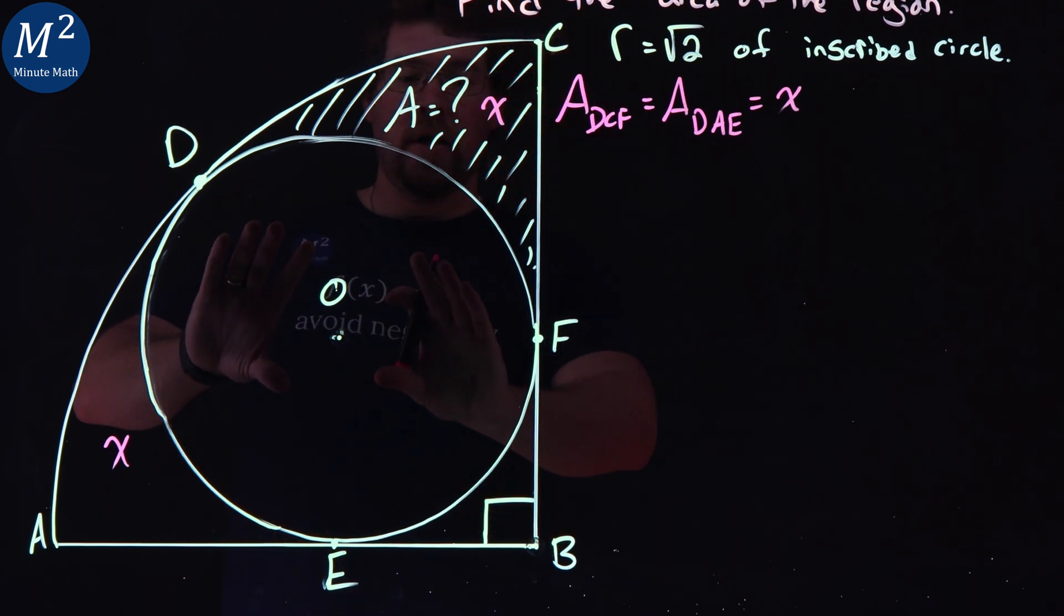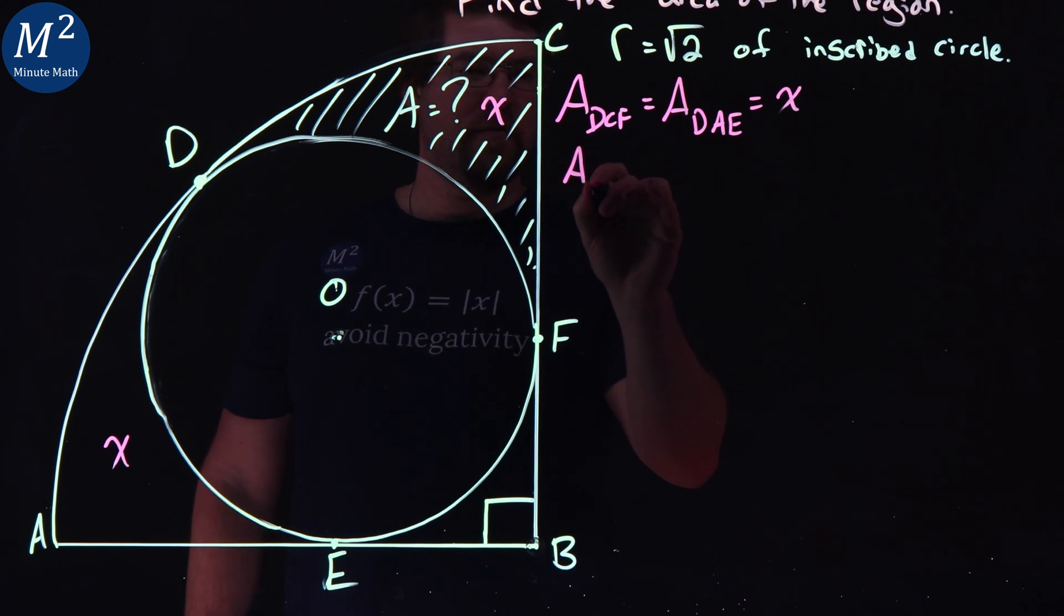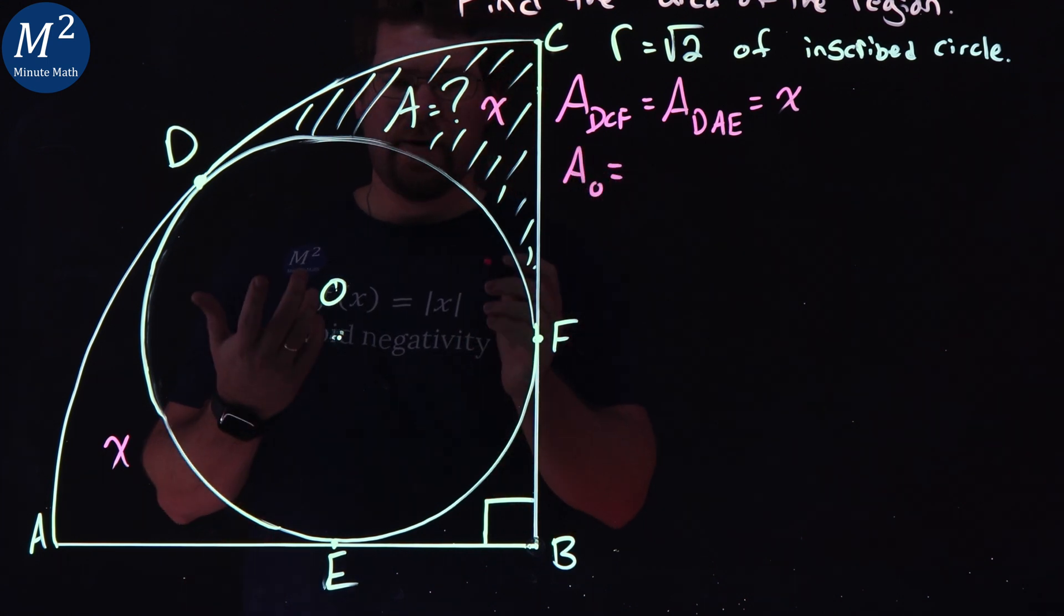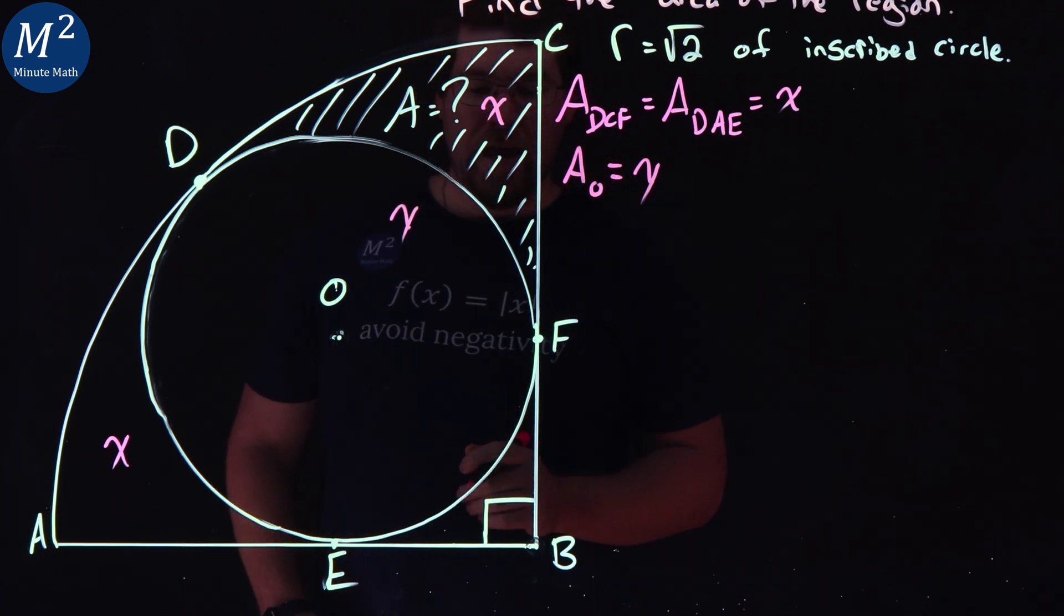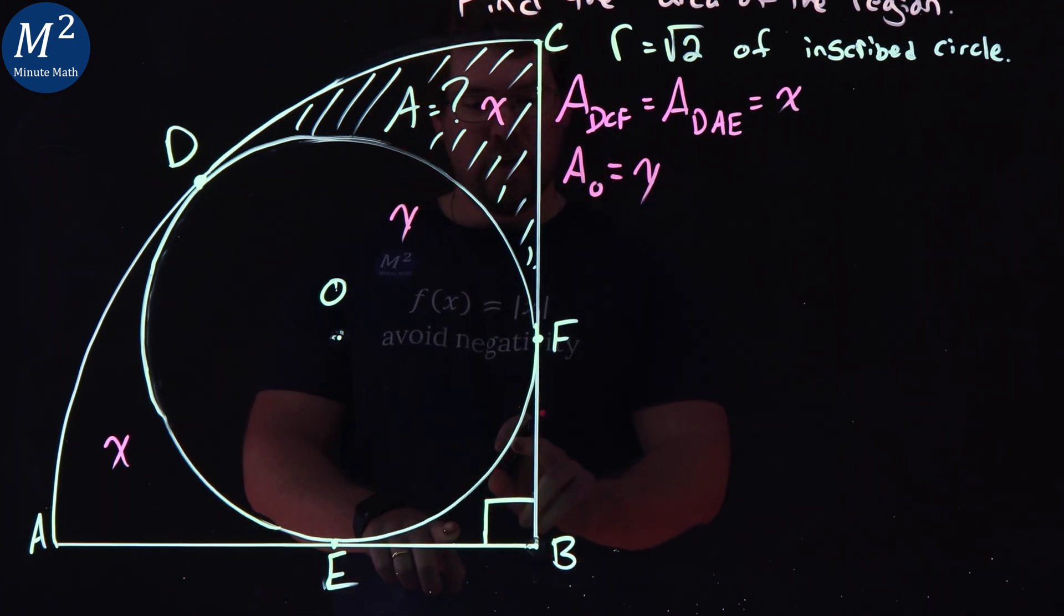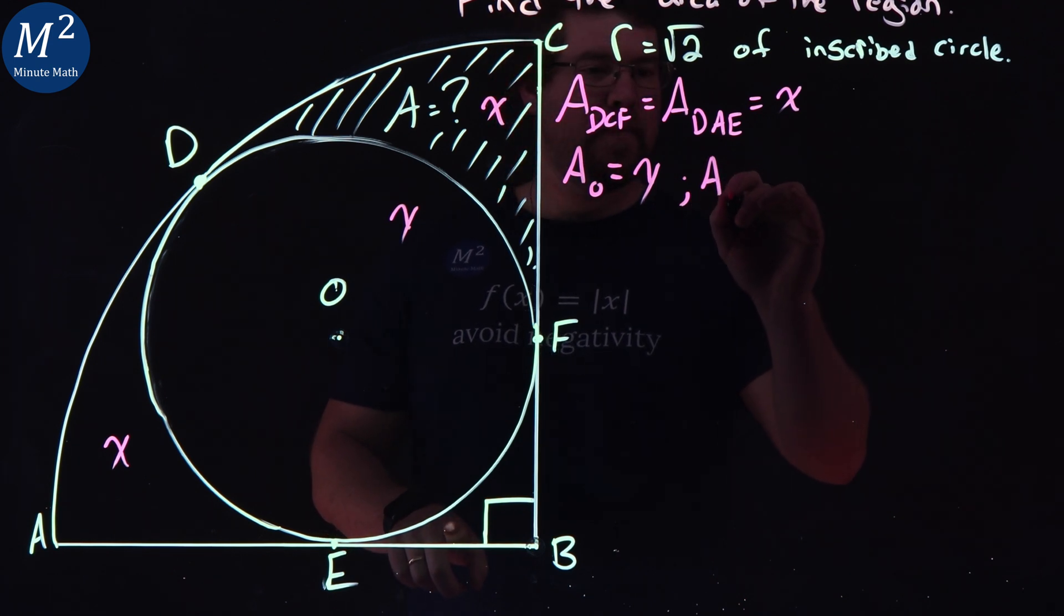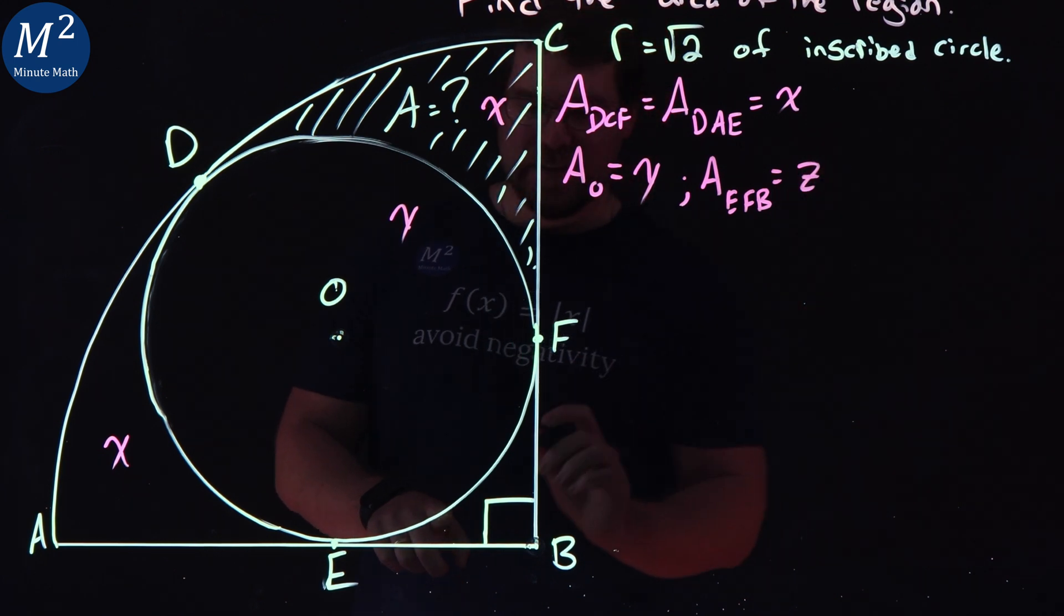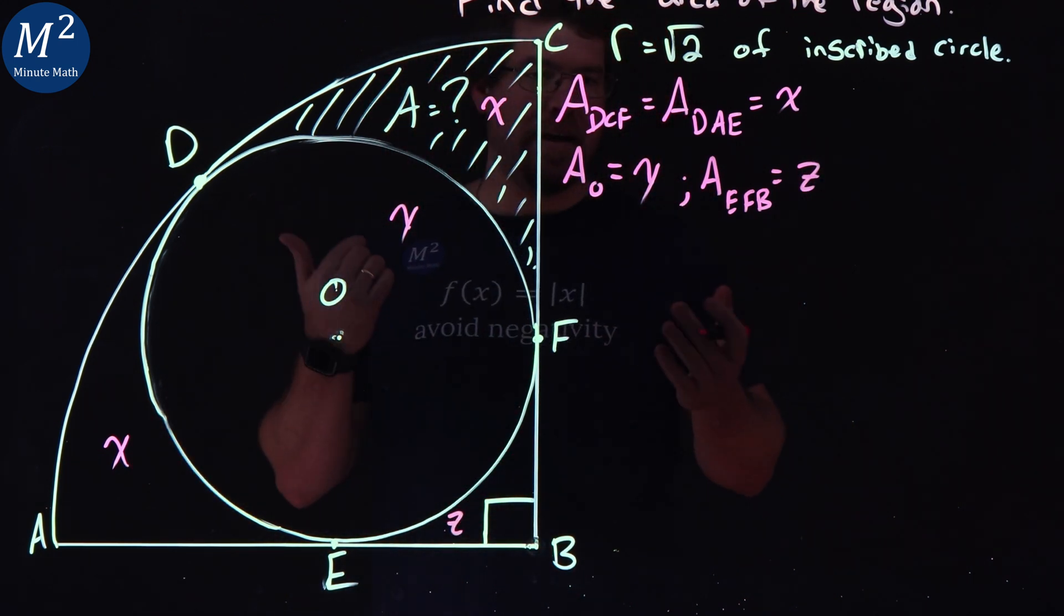I'm going to say the area of our circle, our circle O, so area of circle O, let's call that Y. And then the area that's left over here, this other region, our area of our region EFB, let's call that Z here. So we have some consistency when we're referring to areas as variables.